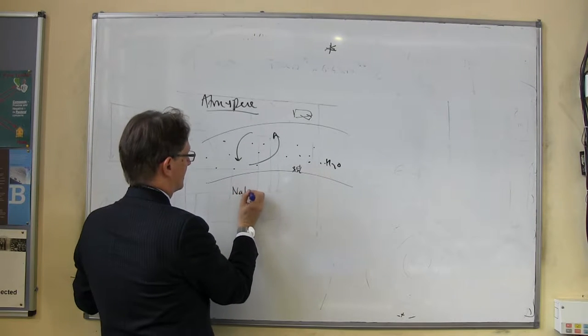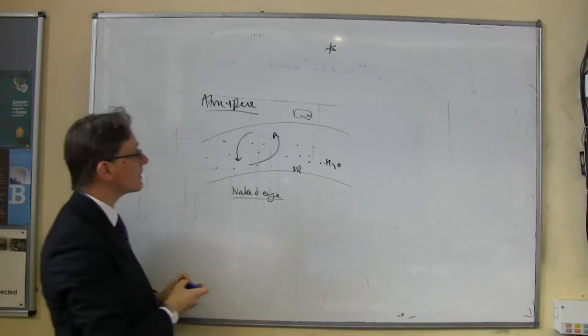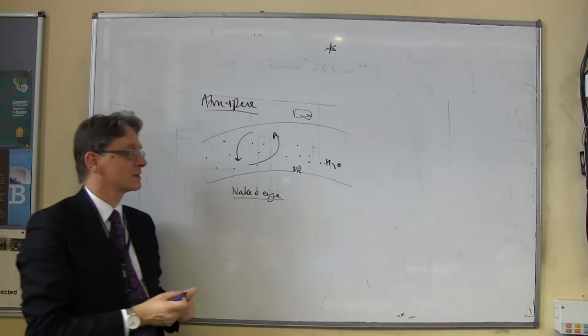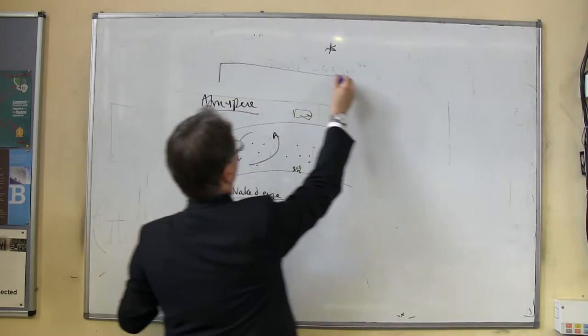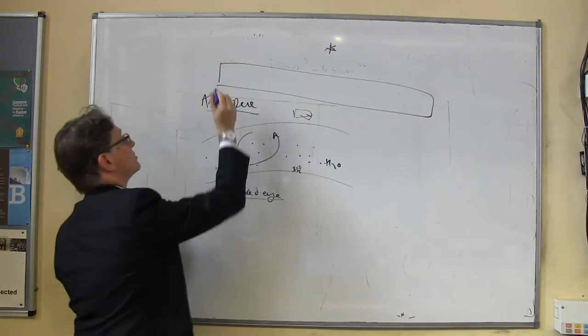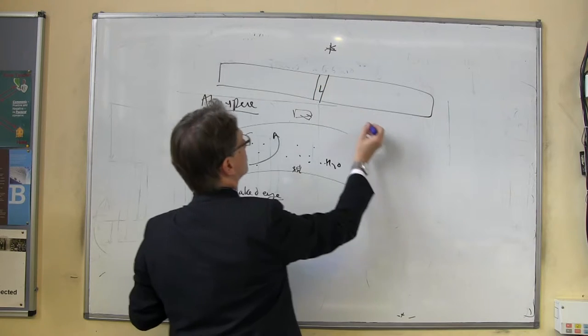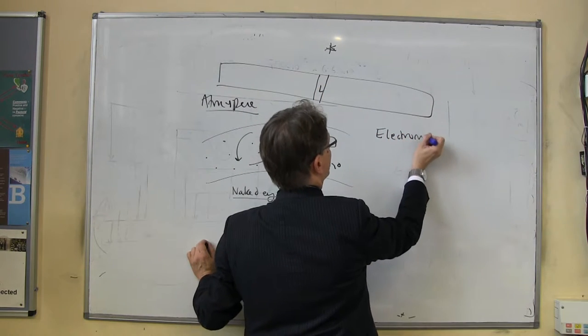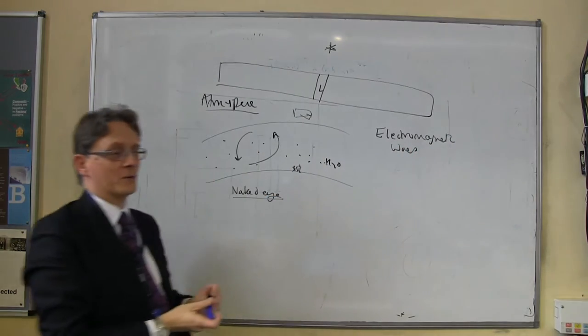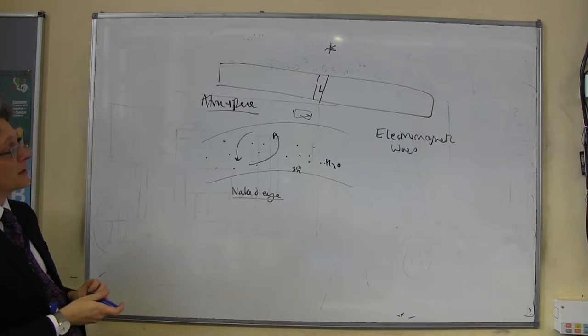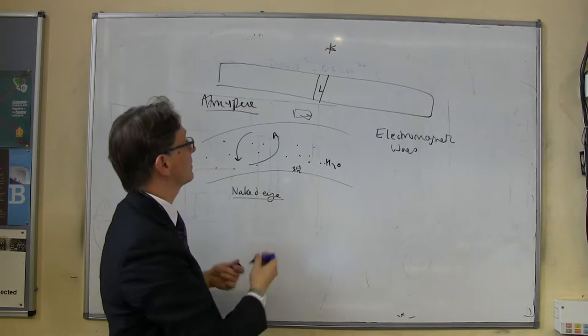First thing we can observe with is the naked eye. And that tells us something about our atmosphere. As you may know from your physics, light is just one of a huge range of waves. Light is one member of a family of waves called the electromagnetic waves.